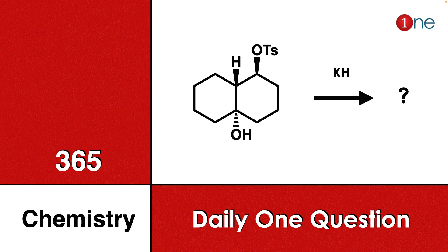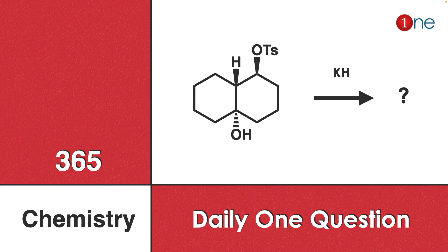Welcome to One Chemistry. This is the 365 Chemistry series. Here you have a decalin system with OH and hydrogen trans to each other, and an OTs group also trans to hydrogen. You react this with a strong base, potassium hydride. You have to determine what the final product will be.